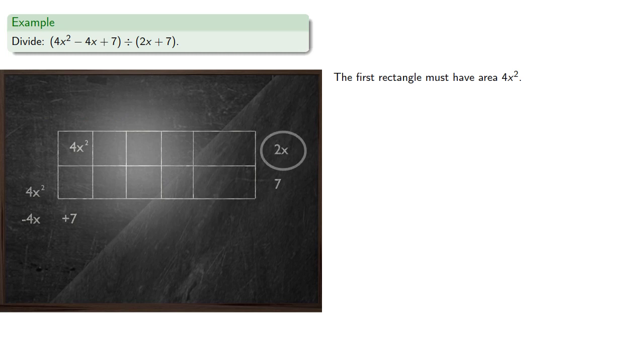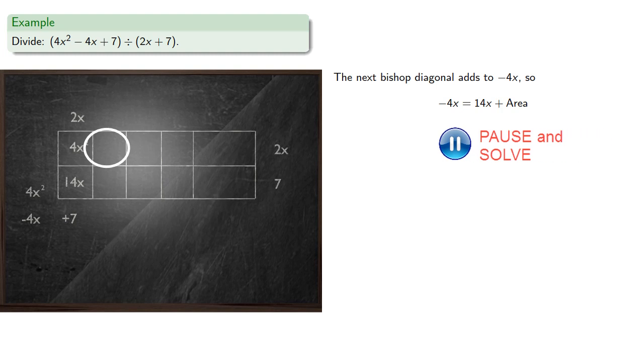Since the height is 2x, the width will also be 2x. And the rectangle below has area 14x. The next bishop diagonal has to add to negative 4x. Now we already have part of that bishop diagonal, this 14x. And so we know that negative 4x must be 14x plus the area of this other rectangle, which will be negative 18x.